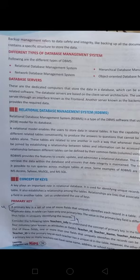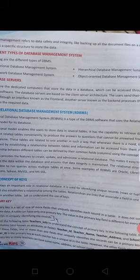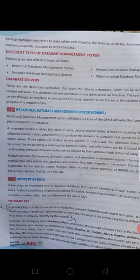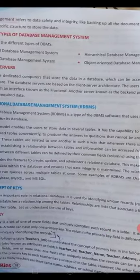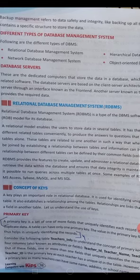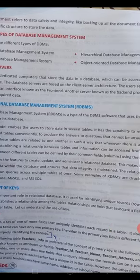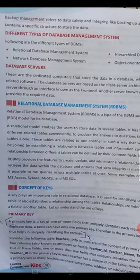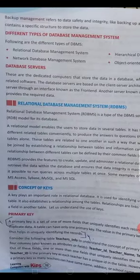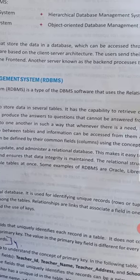Relational Database Management System is a type of DBMS software that uses the relational database model. The relational database model means table format. It is used to store data in separate tables and has the capability to retrieve data from different related tables. Conventionally, an RDBMS provides features to create, update, and administrate a relational database, making it easy to search and retrieve data while ensuring data integrity. The relational structure makes it possible to run queries across multiple tables at once.